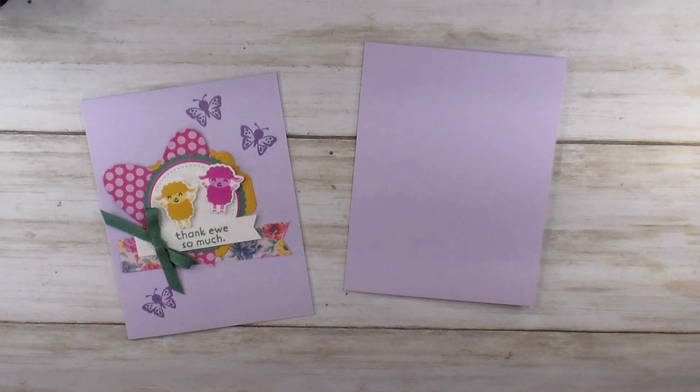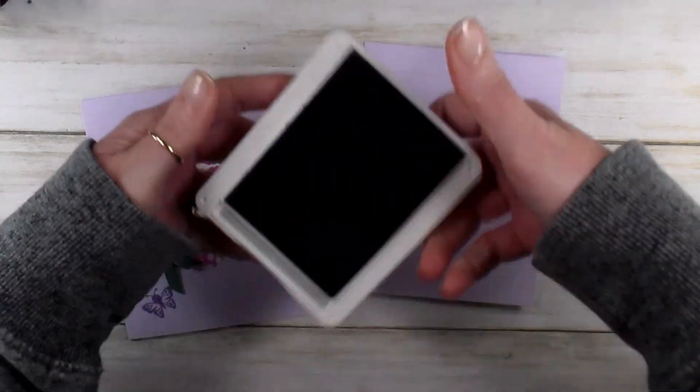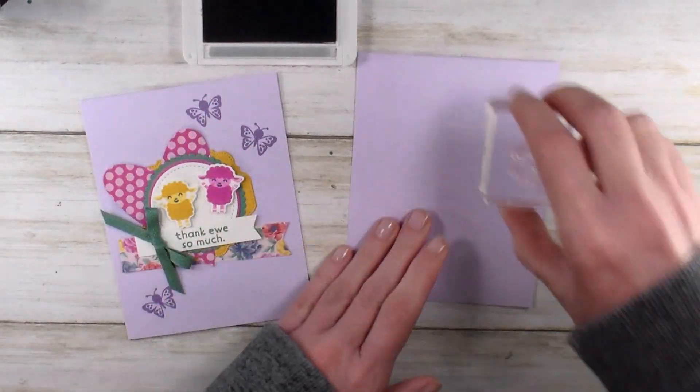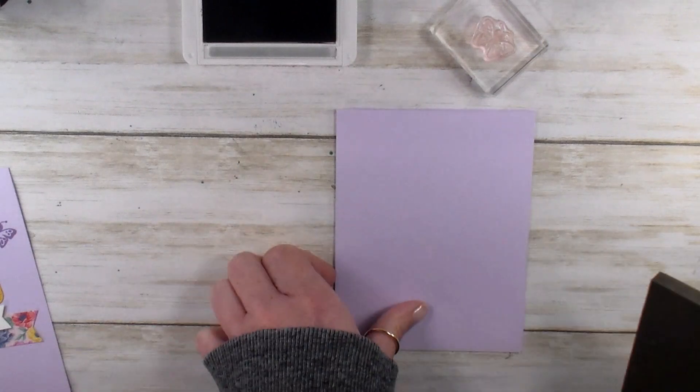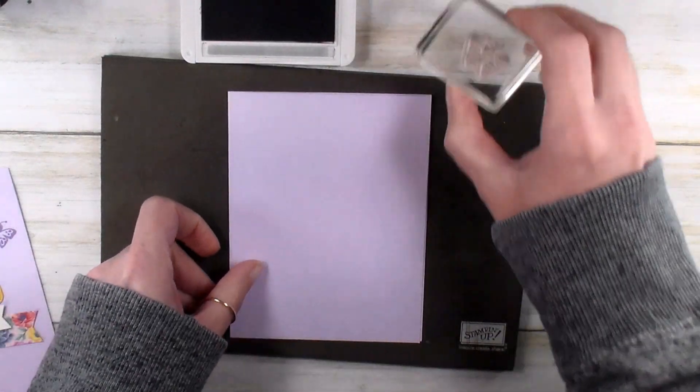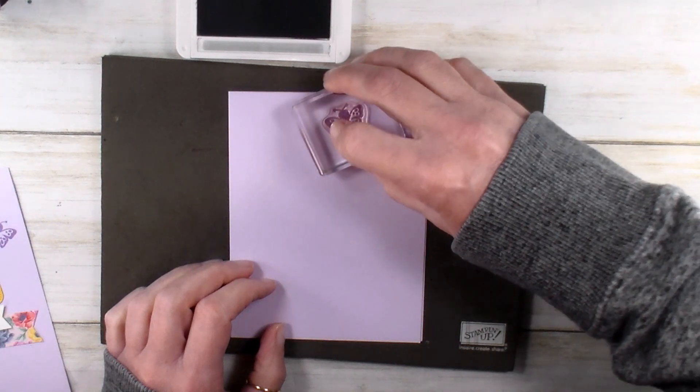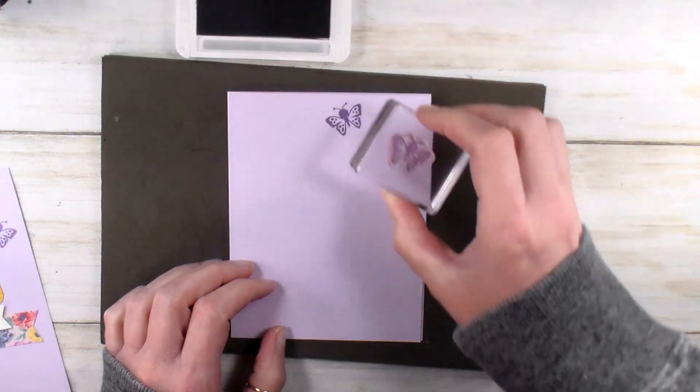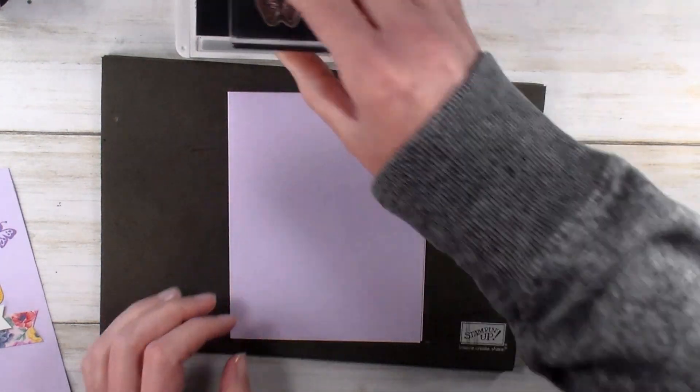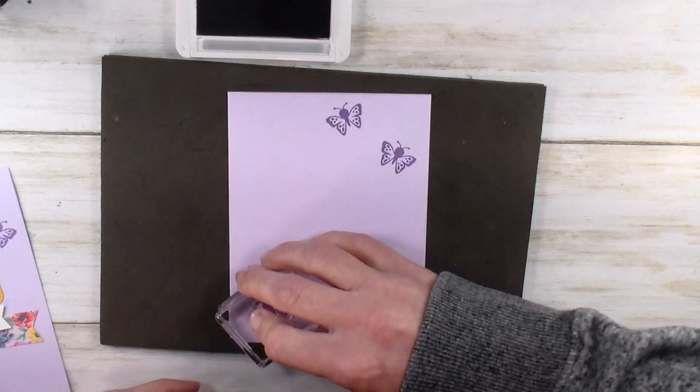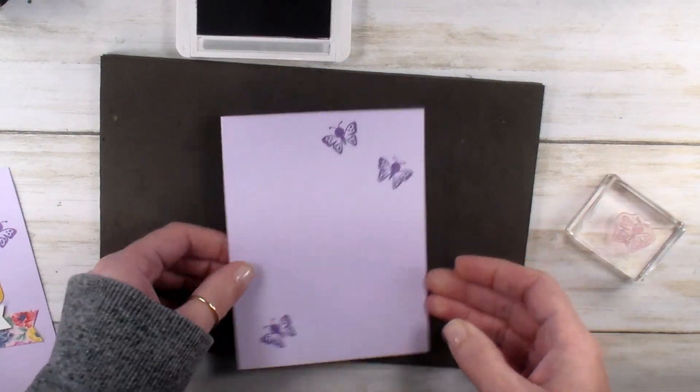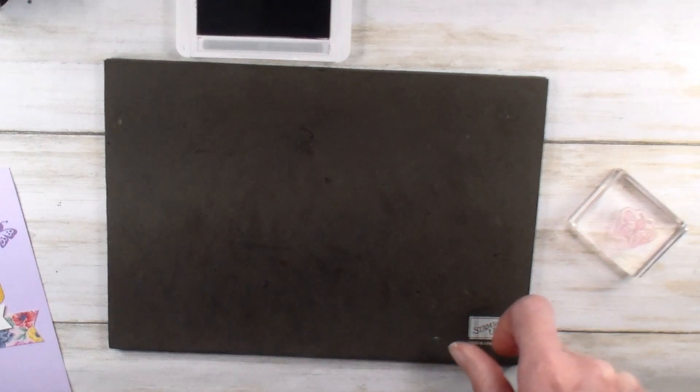The first thing I want to do is stamp a little detail on the back of this card. We're going to use Highland Heather and the little butterfly from the Hippo and Friends. So my Stamp and Pierce mat here, that's going to give us our best impression. And we're just going to stamp three little fluttering butterflies. Two up high, one in the bottom corner.